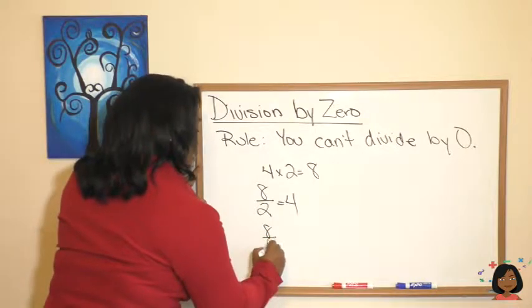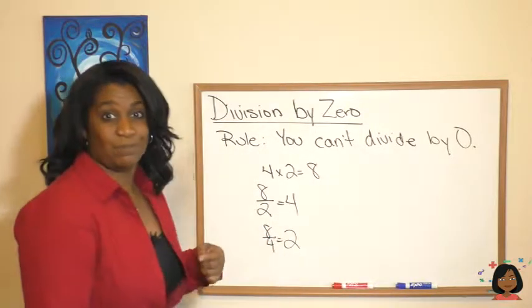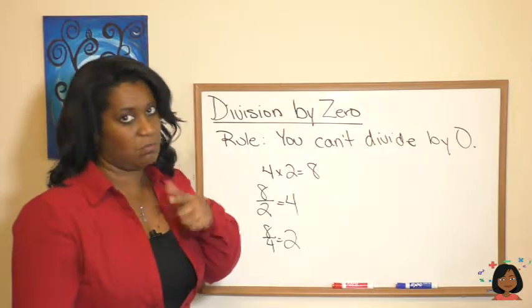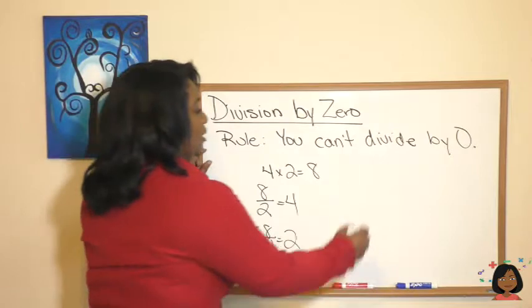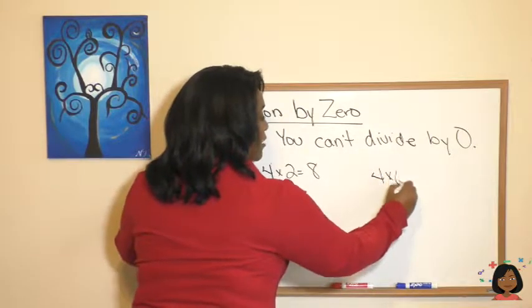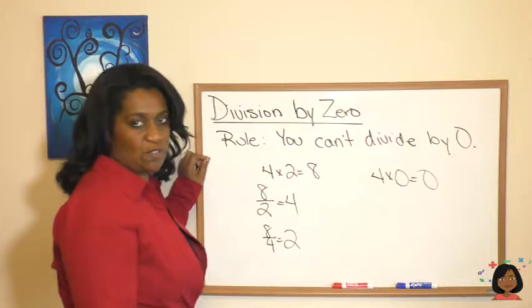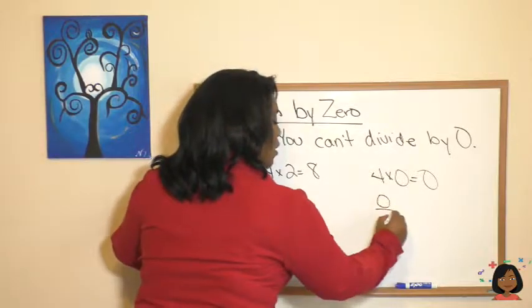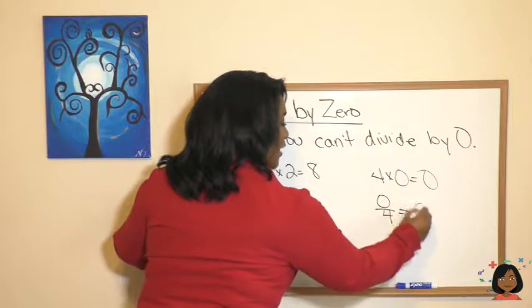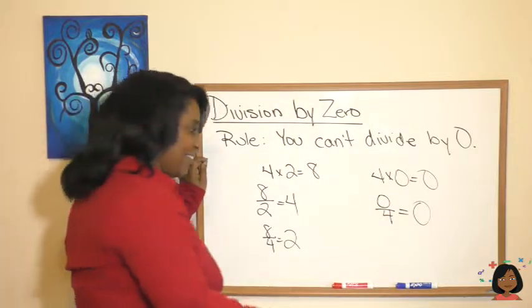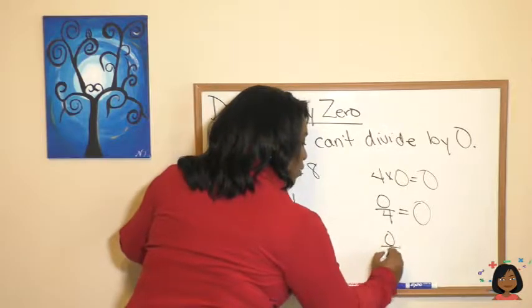Let's try this when we have a zero in the mix. So let's do four times zero equals zero. Let's try to write our two division facts. If I did zero over four, does that give me zero? Yes, it does.